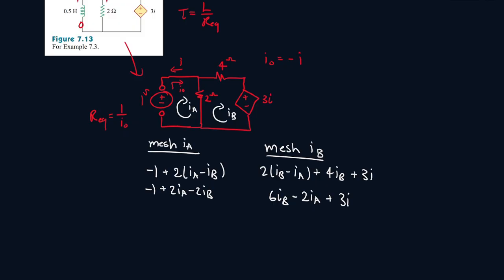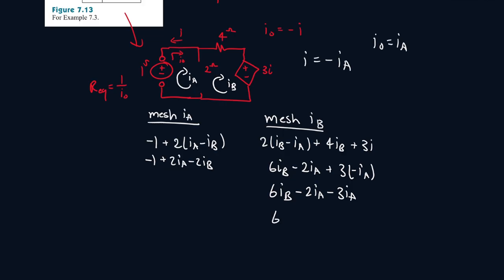We know I will be equal to minus I0, and we see I0 and IA move in the same direction, so that means I0 is equal to IA. So it will be minus IA. So we can plug that in here. So it will be 6IB minus 2IA minus 3IA, which is minus 5IA. They're both equal to each other if we bring it to the other side. So IB will be equal to 5 over 6 IA.